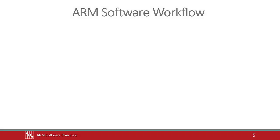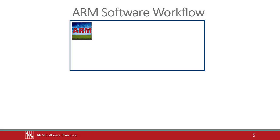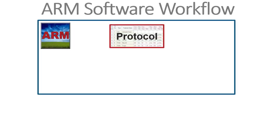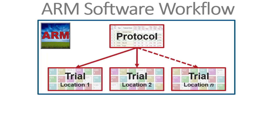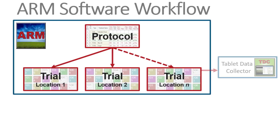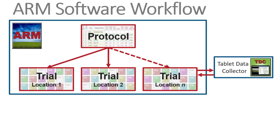It is important to note that the ARM workflow uses two types of data files. A protocol is the plan for an experiment. Use a protocol to create trials for each location or year of an experiment. Then enter assessments into each trial, with the Tablet Data Collector software while in the field, or by hand back in the office.